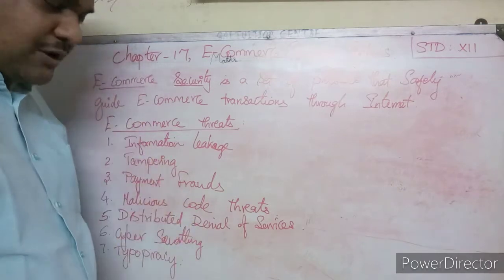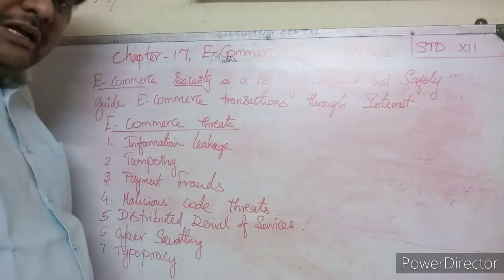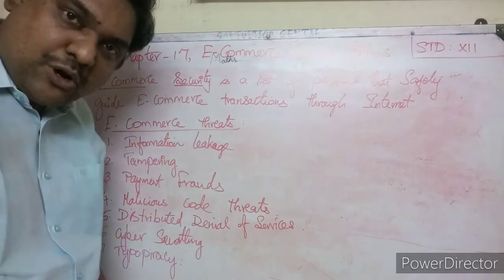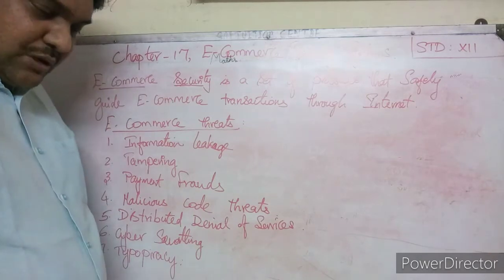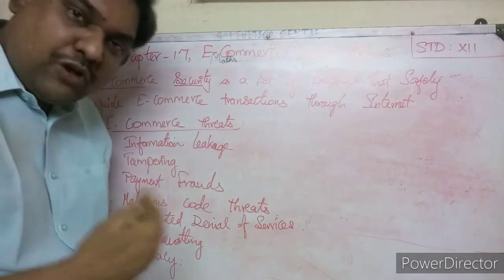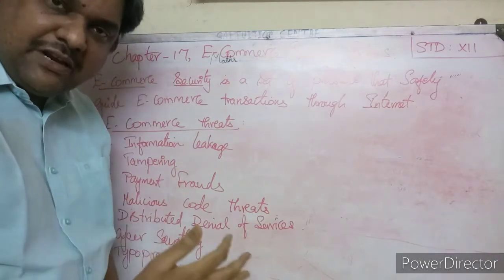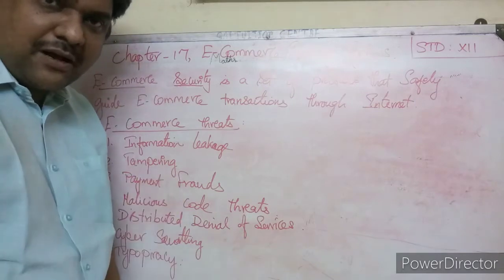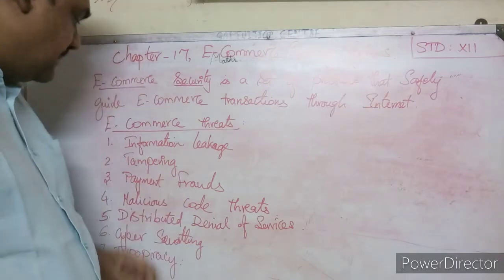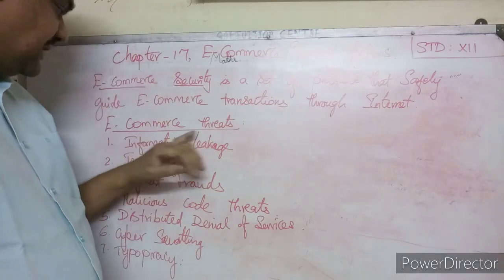There are e-commerce threats and problems. You can get 7 problems related to e-commerce. We will talk about how to avoid them and address them topic by topic. The first e-commerce threat is Information Leakage.